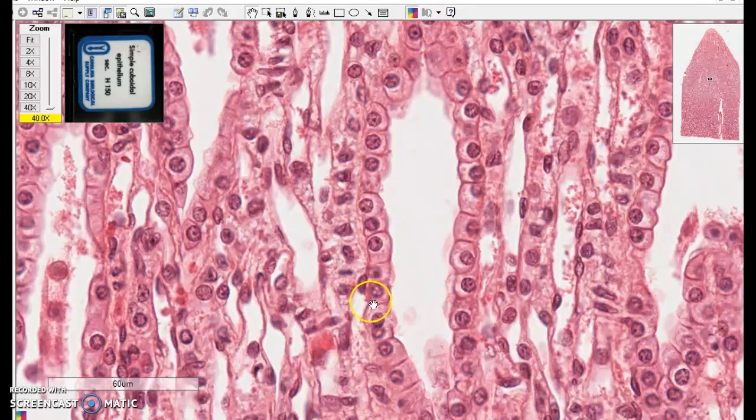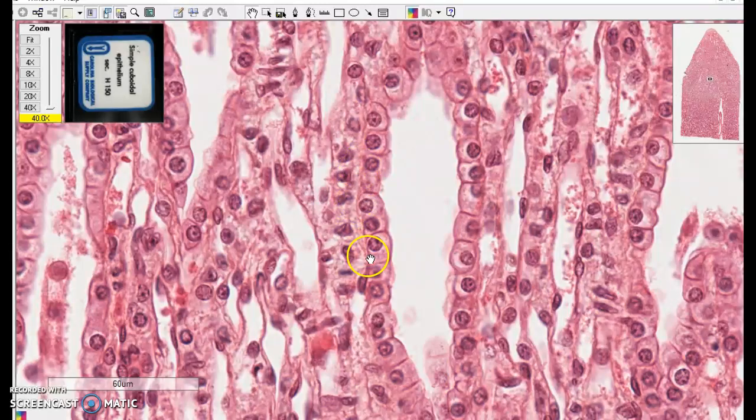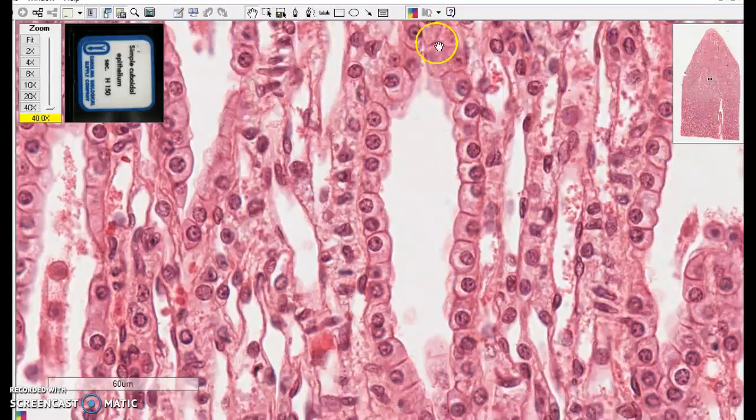So here is a single line. These are forming a tubule and this here is a simple cuboidal cell. Here's one, here's one. The basement membrane would be right along here. This is the inside of a tubule and there's a single layer of cells.